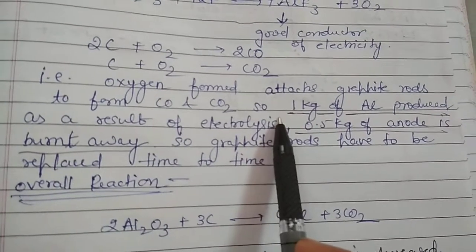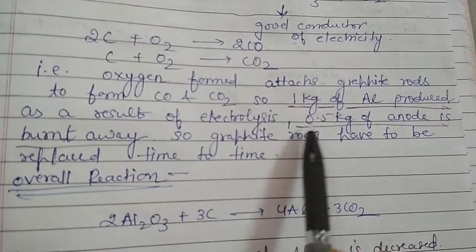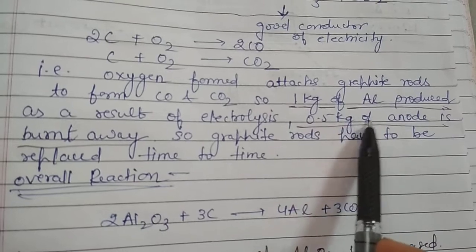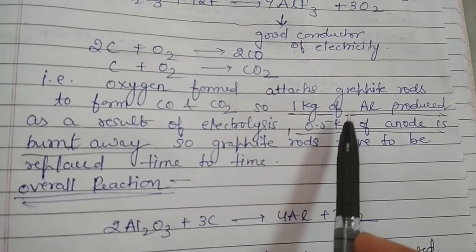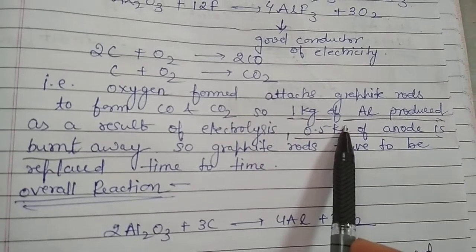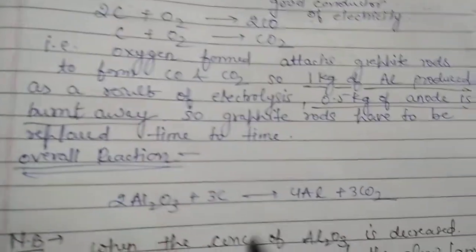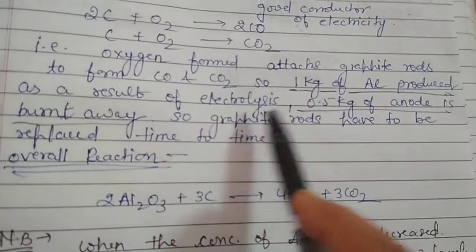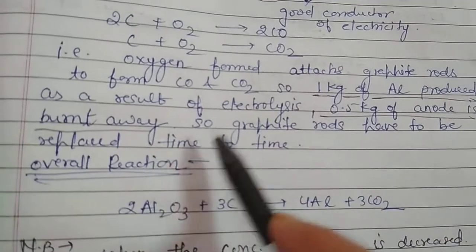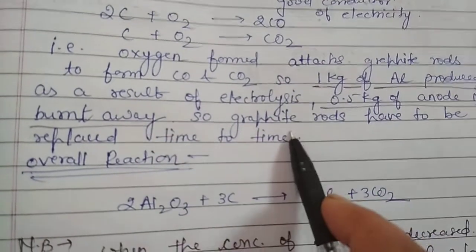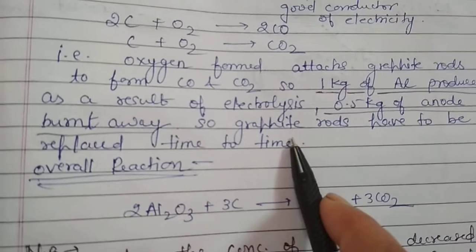During electrolysis, when we are producing 1 kg of aluminium, 0.5 kg of the graphite anode rod is burnt away. So the graphite rods have to be changed and replaced from time to time. That is a drawback of the process.